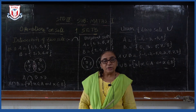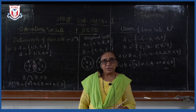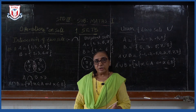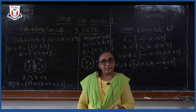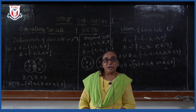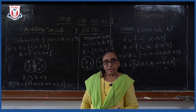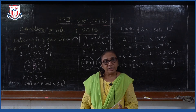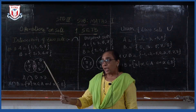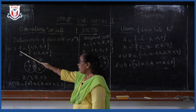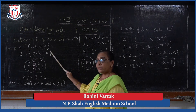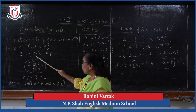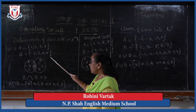Now we will see the operations on sets. In operations on sets, we are going to study about the intersection of two sets, then disjoint sets, and union of two sets. Let us see first the intersection of two sets. I have written one example here: set A consists of elements 1, 3, 5, 7 and set B: 2, 3, 6, 7, 8.